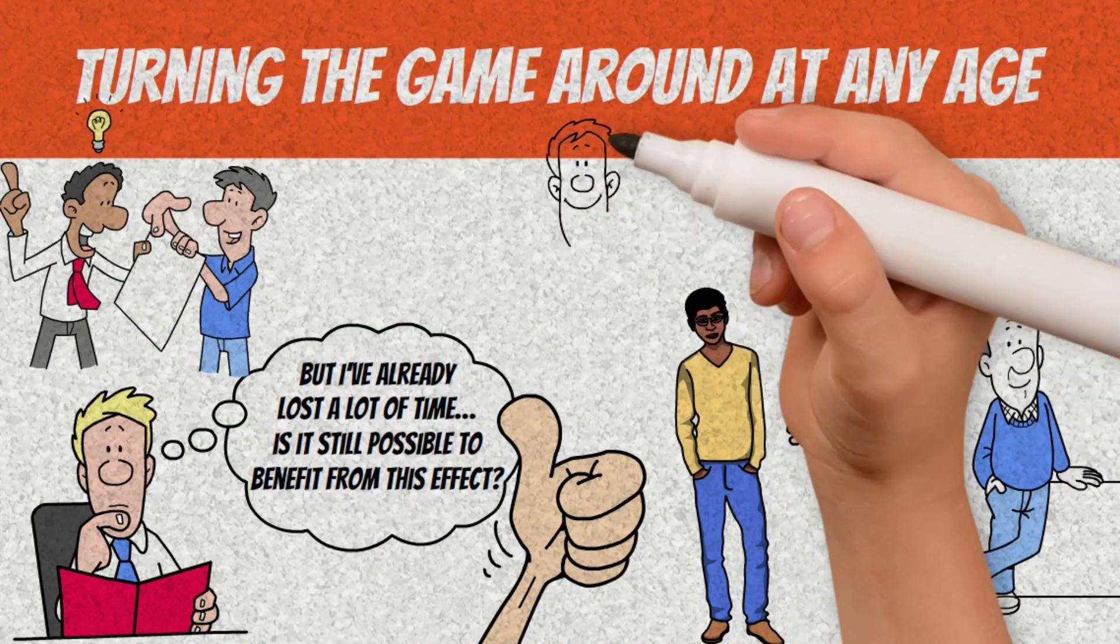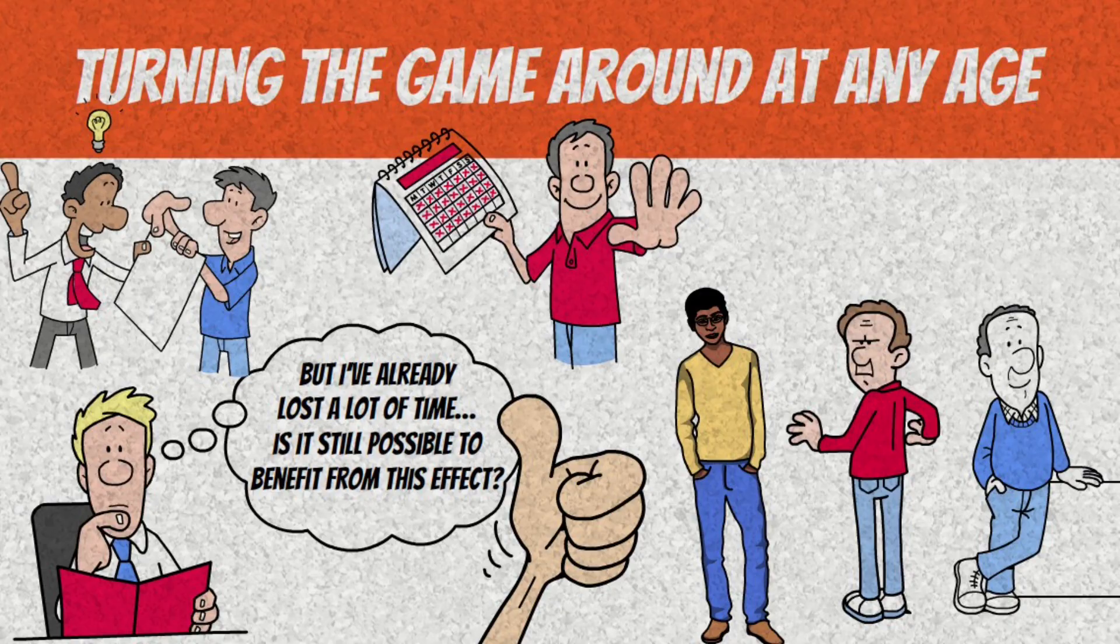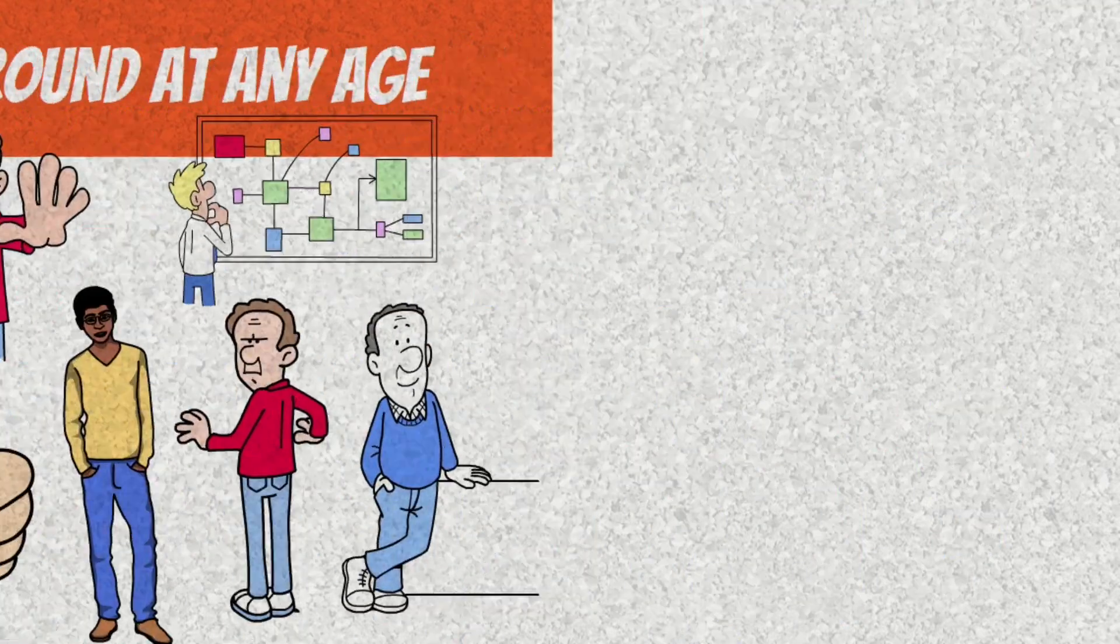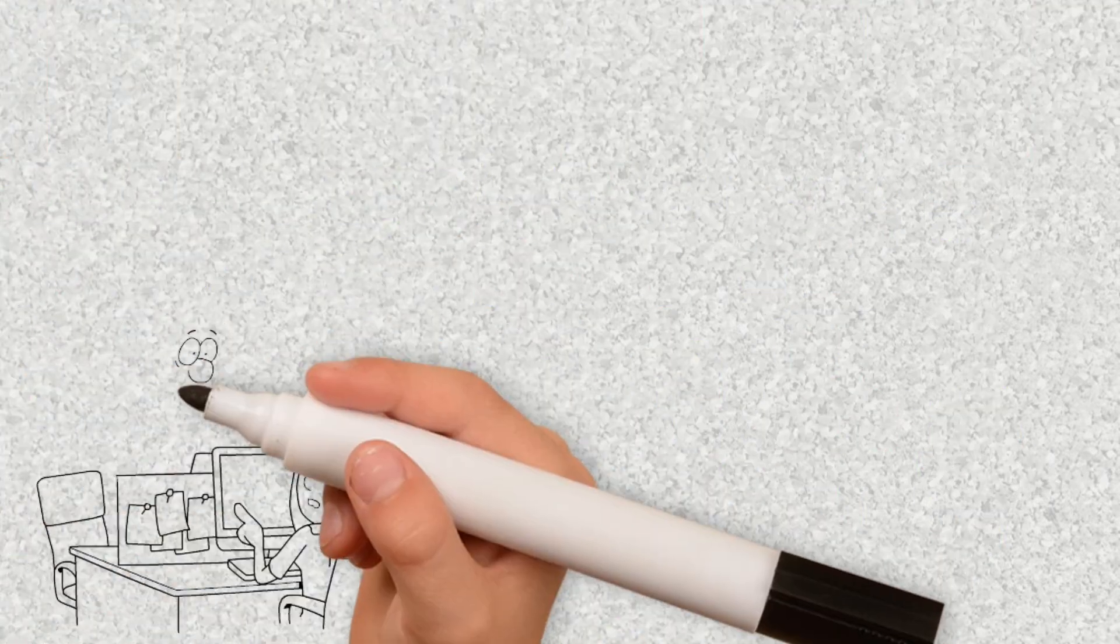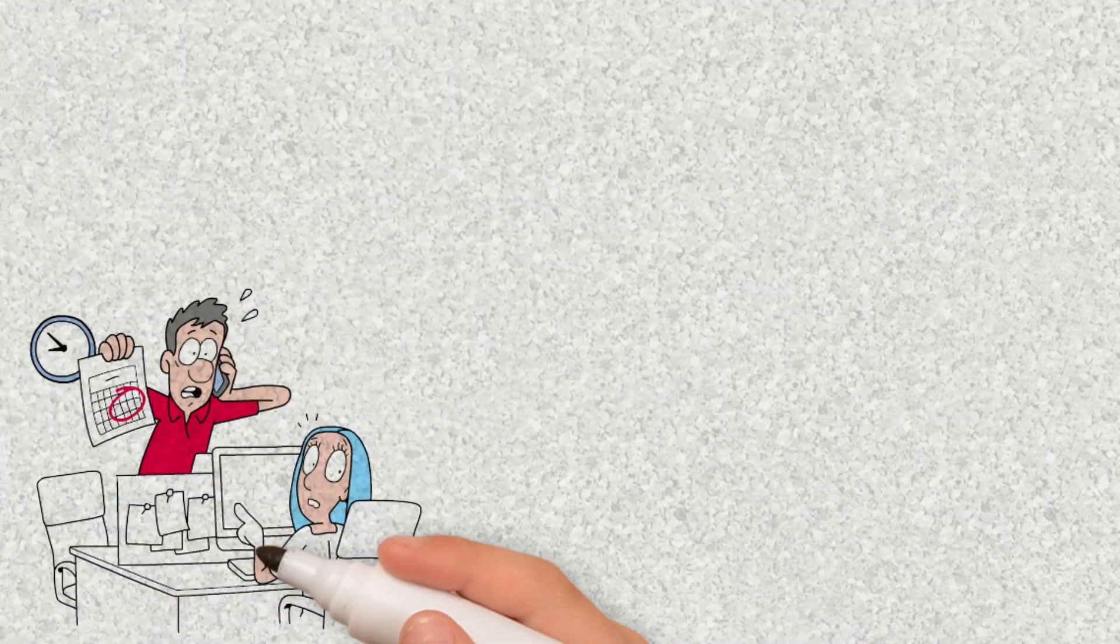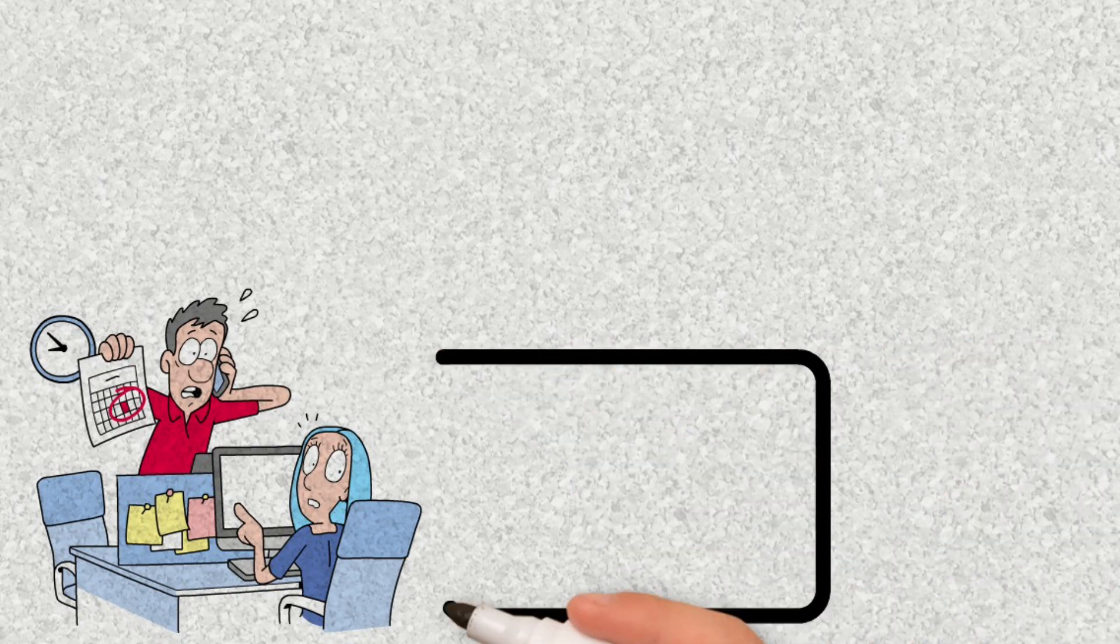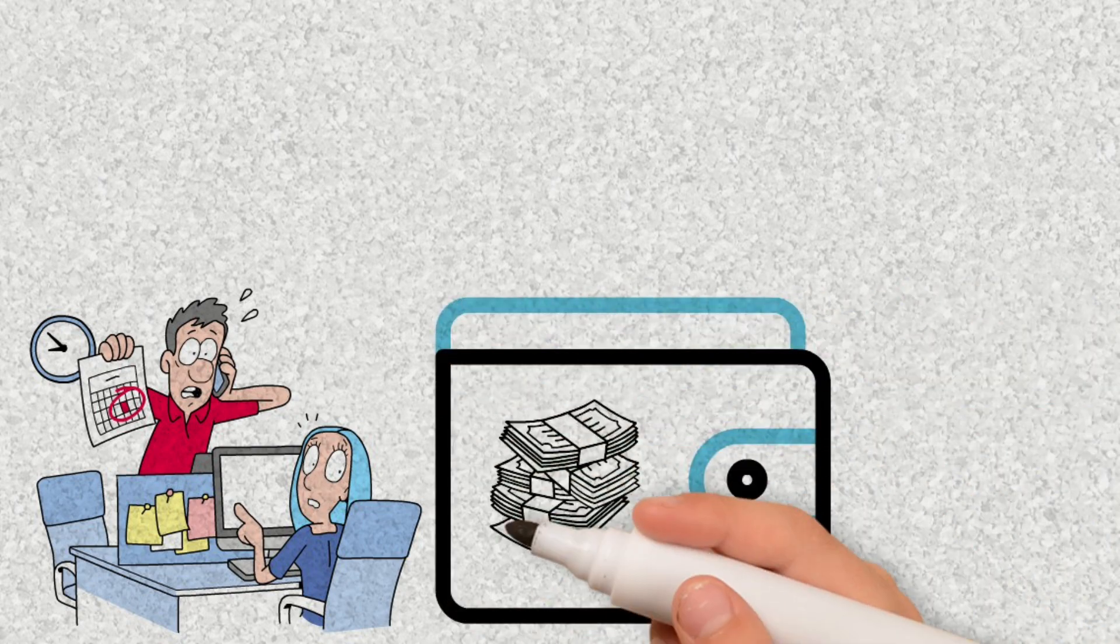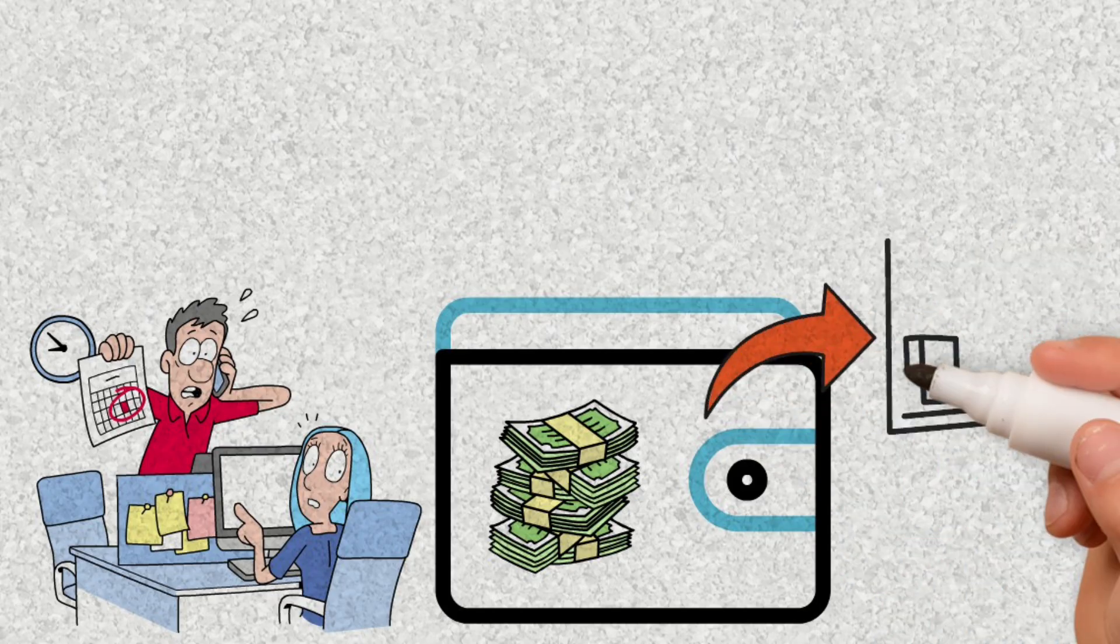It's true that the earlier you start, the greater the power of compounding. But the beauty of the strategy is that it also works for those starting late. The difference is that if you have less time available, you need to accelerate the cycles from the beginning. This means making larger contributions, choosing investments with faster growth potential, and being even more disciplined in reinvesting everything.